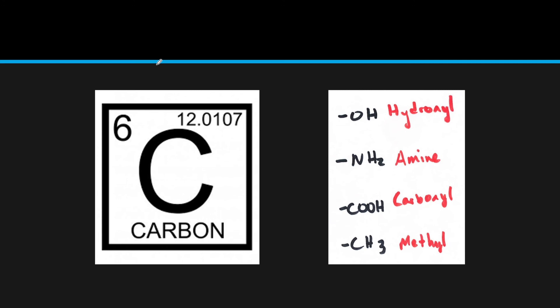One of the most important concepts is organic compounds. Organic compounds are compounds that contain carbon and hydrogen. Carbon is element number six — it has six protons. It can vary the neutrons depending on the isotope, but with an average atomic weight of 12, it usually has six neutrons and six electrons.